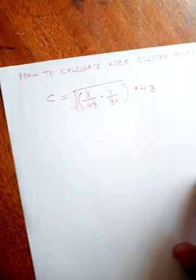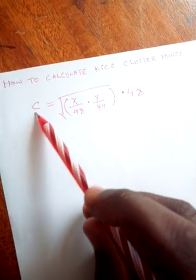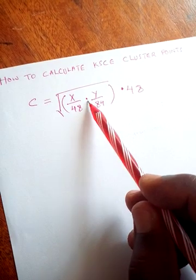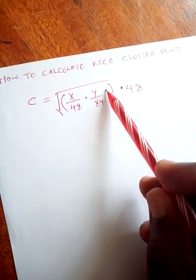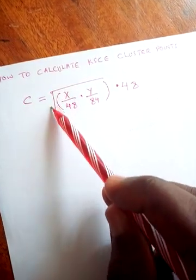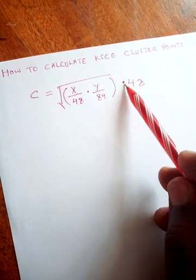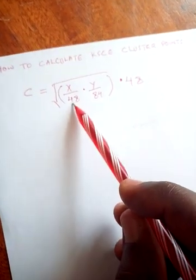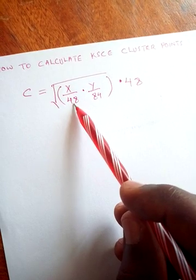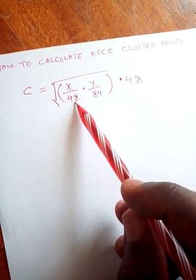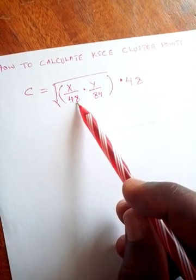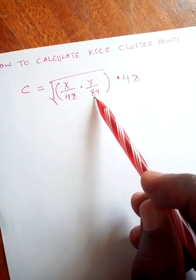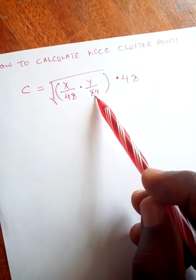So in this case, C is equivalent to the square root of X over 48, multiplied by Y over 84, all in brackets under the square root, then you multiply all through by 48. This 48 comes from 12 multiplied by 4 subjects or units, and this 84 comes from 7 multiplied by 12.